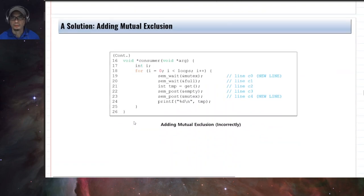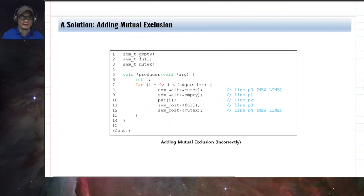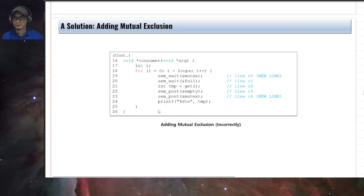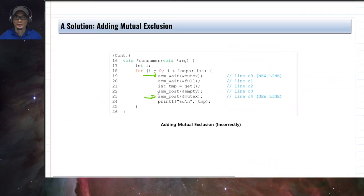One approach is to add mutex locks around the critical section in both the producer and consumer. The producer acquires the lock, calls sem_wait on empty, puts the value, posts to full, then unlocks. However, this introduces a problem: if the consumer acquires the mutex at line C0, then calls sem_wait on full with the semaphore value negative, the consumer thread goes to sleep while still holding the mutex. The producer then tries to acquire the same lock but cannot, since the sleeping consumer holds it — resulting in a deadlock.